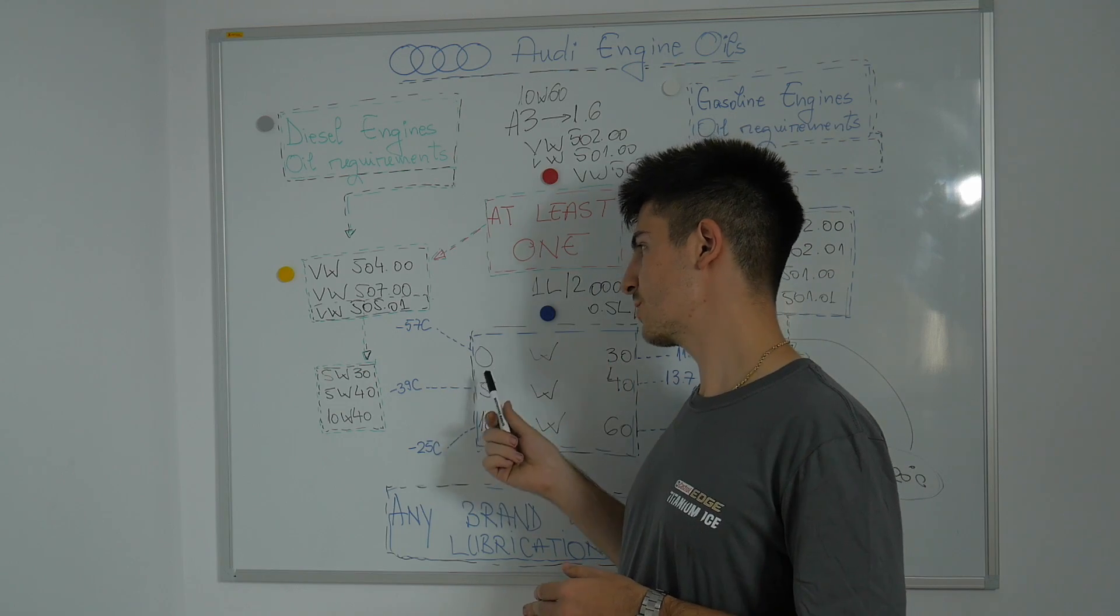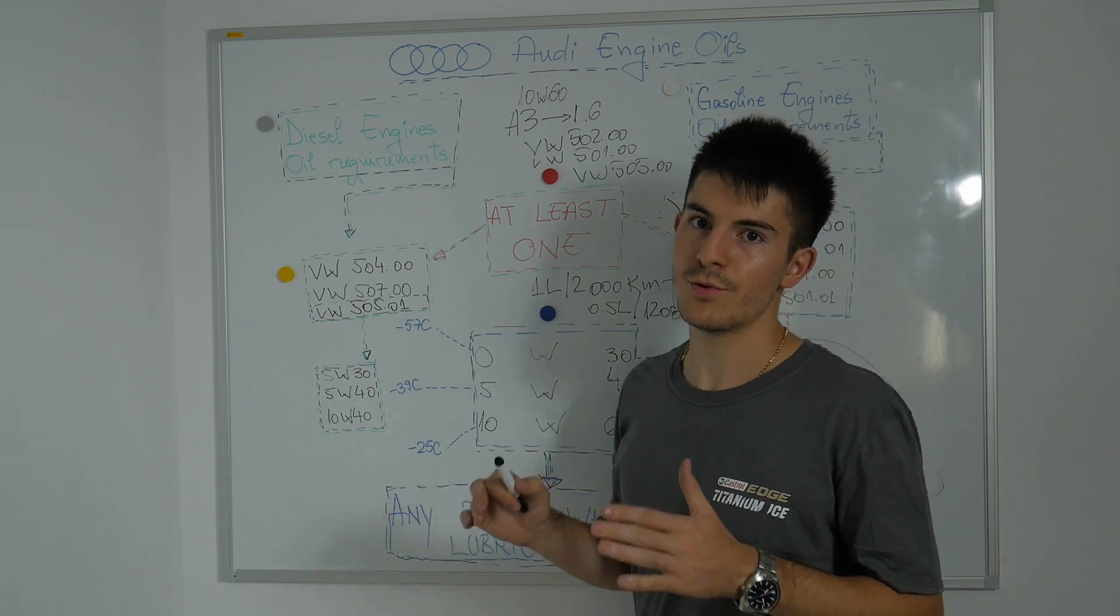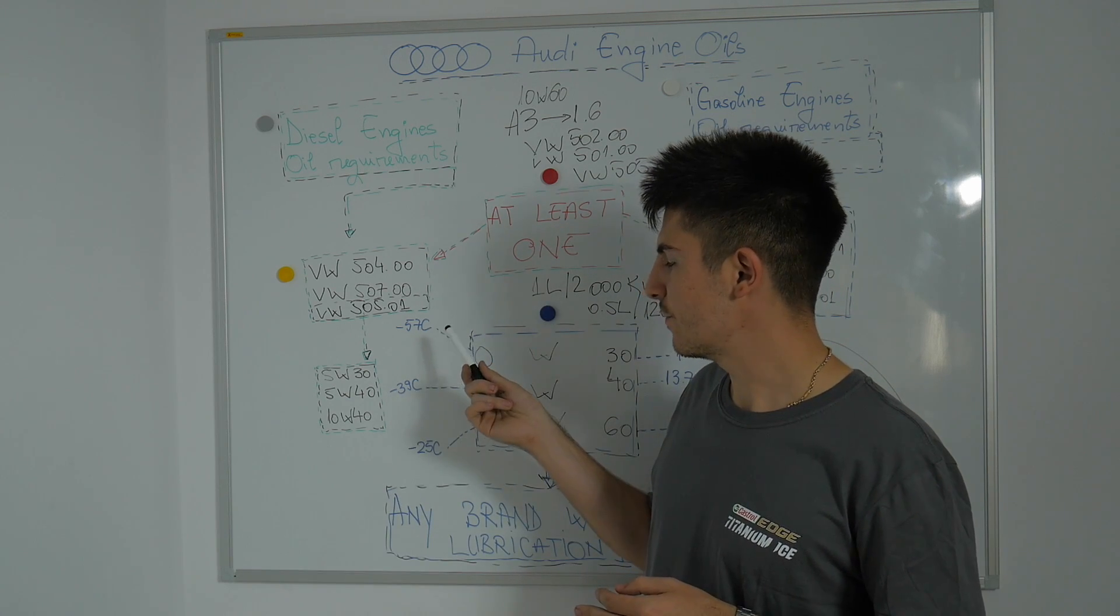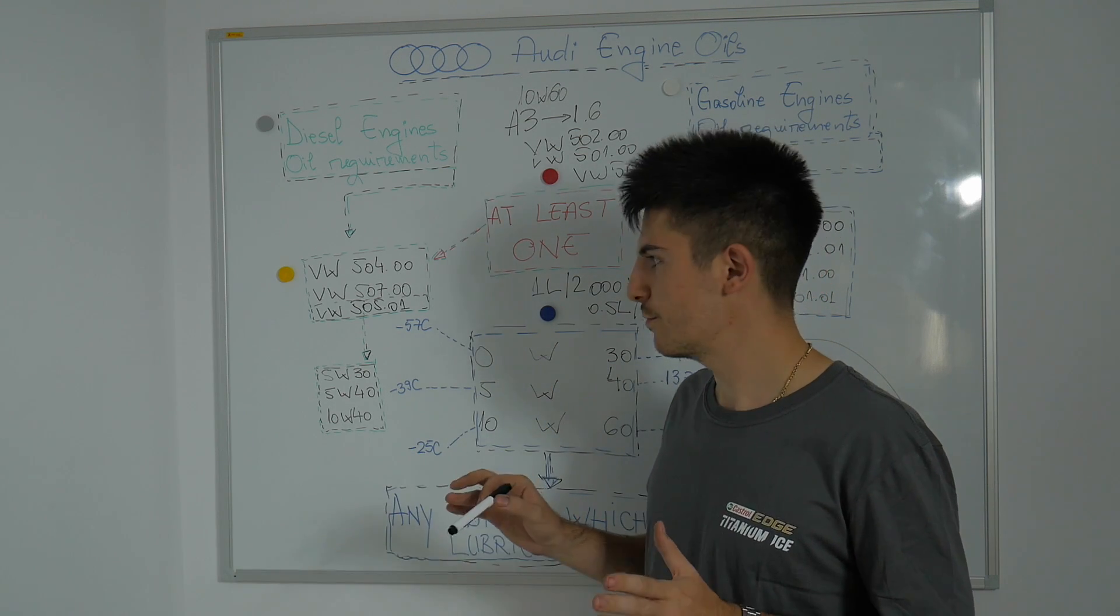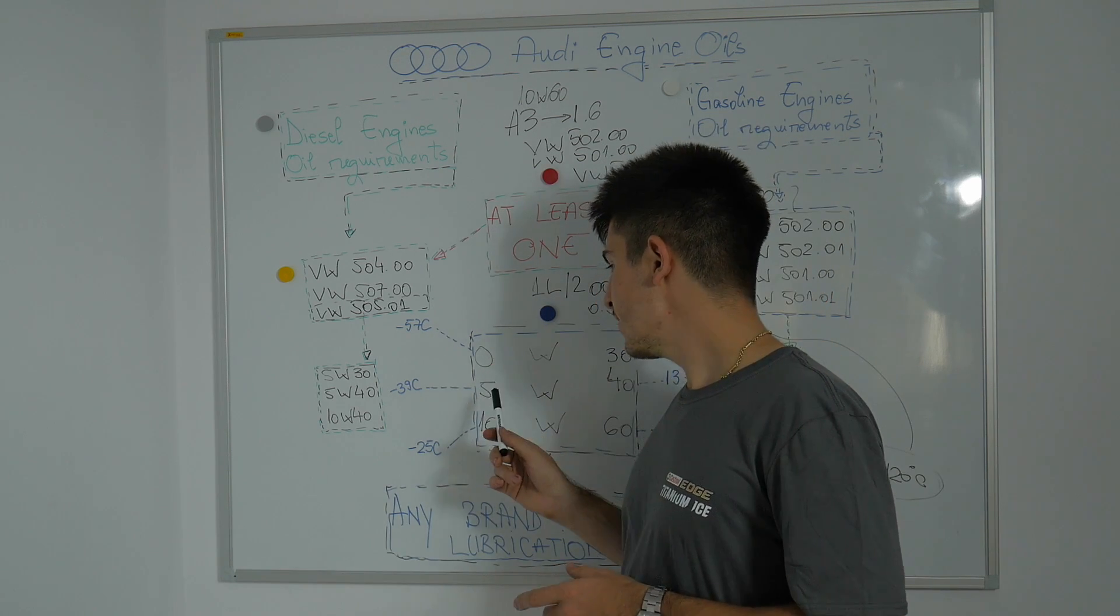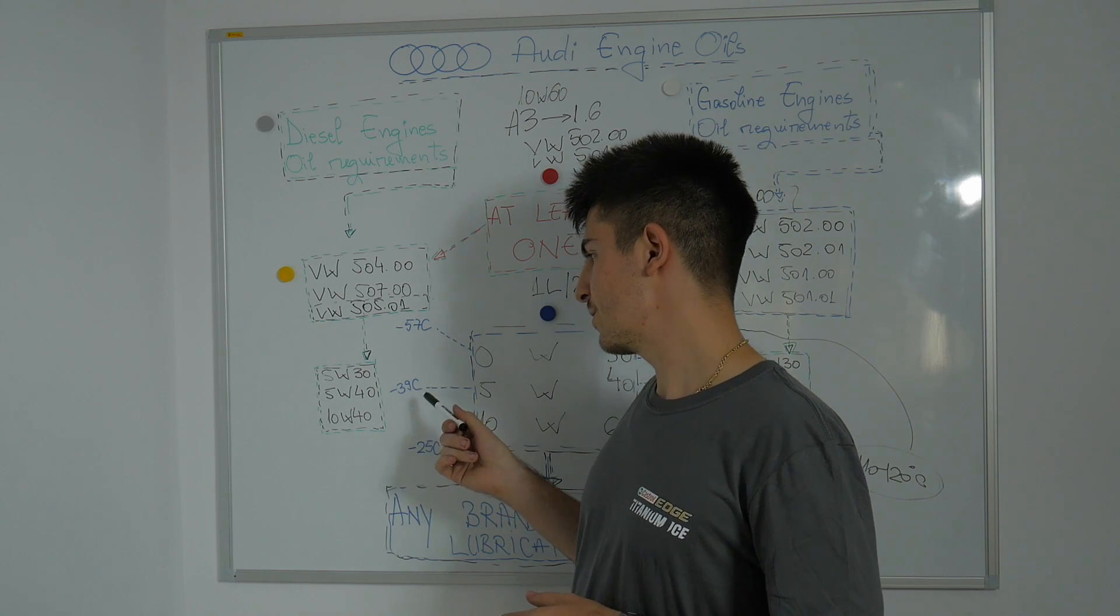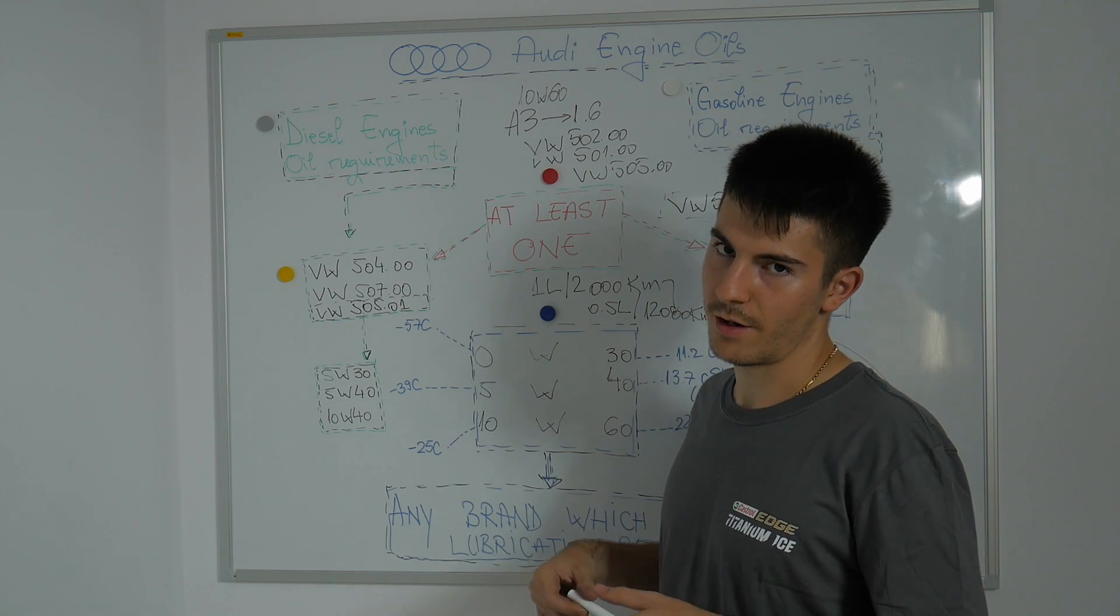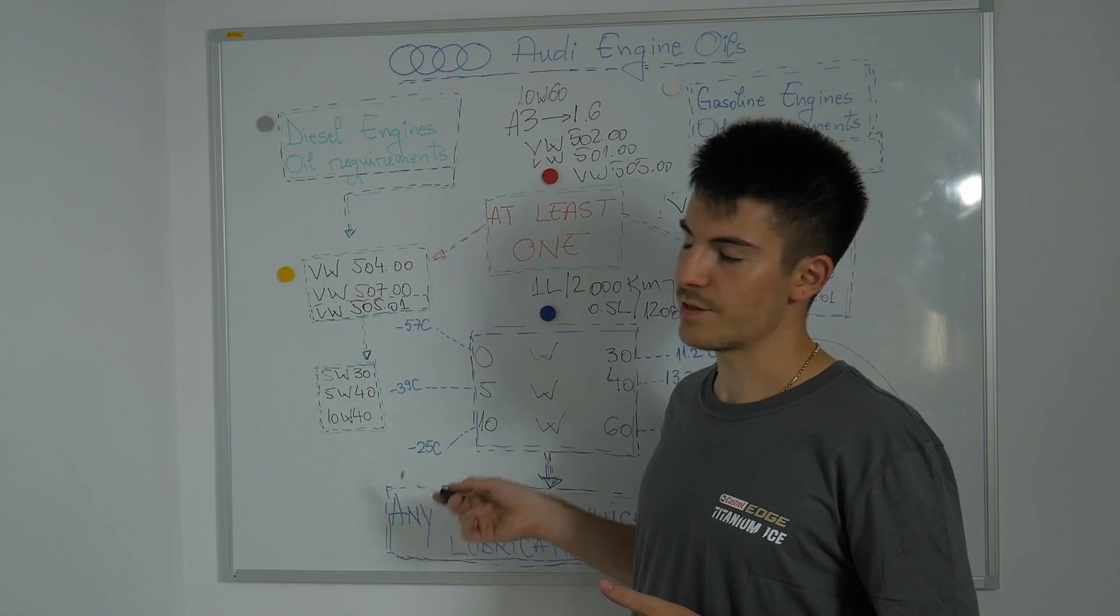That's why the 5W-40 is ideal - it's just between a thin oil and a thick oil. Now zero stands for the pour point of the oil, or the maximum allowed temperature for that oil. In our case it has minus 57 degrees Celsius. I don't know where you can drive at that temperature, but that's its limit. For 5W we have minus 39 degrees Celsius, and for 10W we have minus 25 degrees Celsius. Now there are areas around the world where temperatures drop below minus 25 degrees.